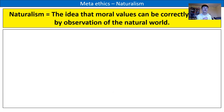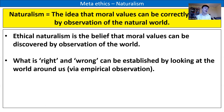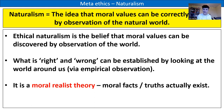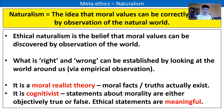Naturalism: the idea that moral values can be correctly discovered by observation of the natural world. Ethical naturalism is the belief that moral values can be discovered by observation of the world — what is right and wrong can be established by looking at the world around us, via empirical observation. This is therefore a moral realist theory, based on the idea that moral facts and truths actually exist because they are out there to discover through observation. It is also cognitivist because statements about morality are either objectively true or false.